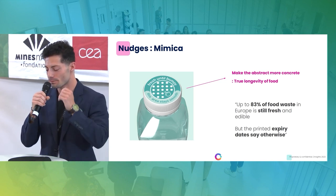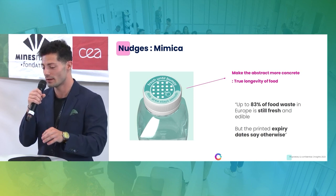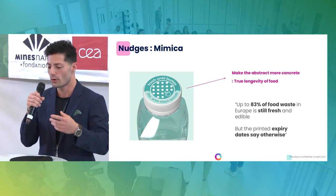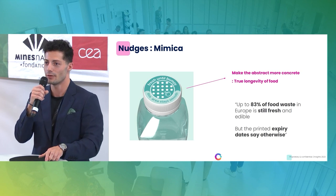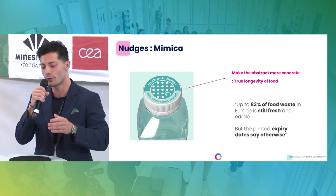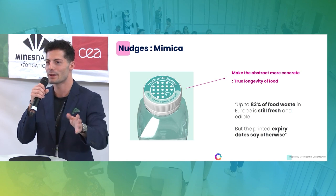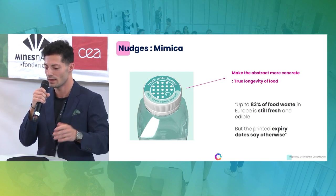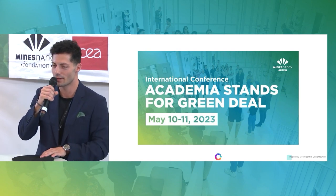Another nudge is Mimica. Up to 83% of food waste in Europe is still fresh and edible, which brings a lot of cost for customers and big companies. The idea of Mimica was to make the abstract more concrete — to show the true longevity of food — by putting an indicator directly on the container. It reads 'fresh until bumpy.' Now you don't have to look, smell, and test, then throw it out because you have a doubt — you just feel the cap. If it's smooth, it's fresh; if it's bumpy, you can't consume it anymore. That's the end of the presentation — thank you very much.